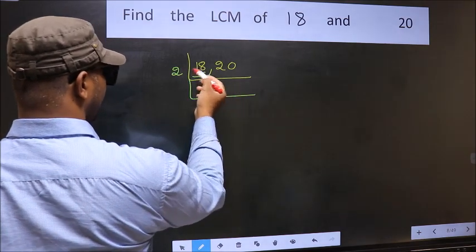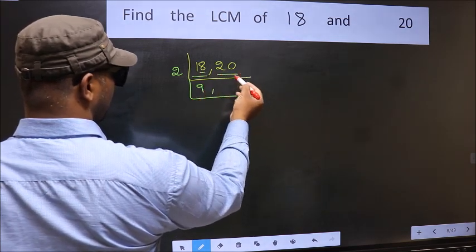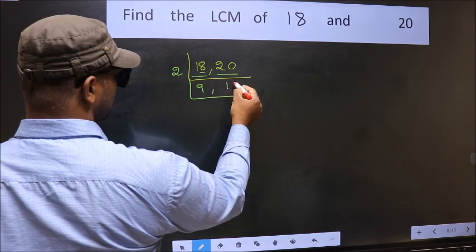When do we get 18 in the 2 table? 2 nines 18. Now the other number 20. When do we get 20 in the 2 table? 2 tens 20.